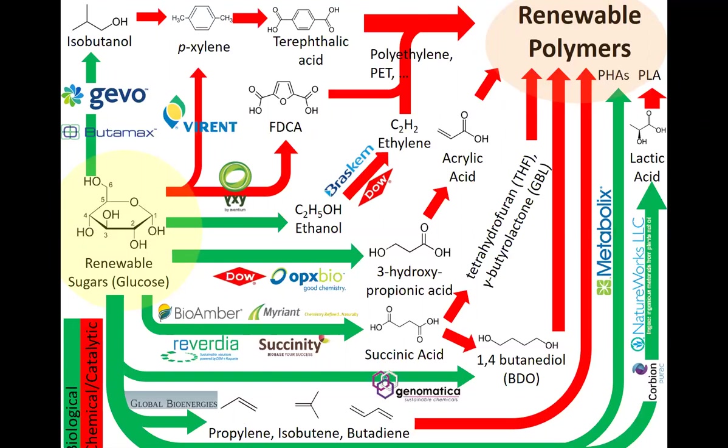This slide shows various ways to make bio-based products from biomass — green arrows represent biological conversion routes and red arrows represent catalytic conversion routes. It highlights a number of biocatalytic and catalytic routes for making renewable polymers and other products, including hybrid routes involving both approaches.